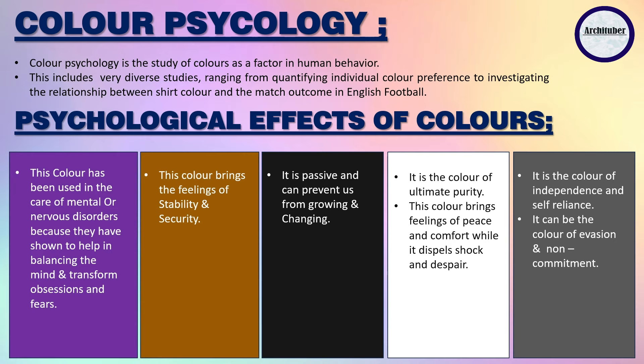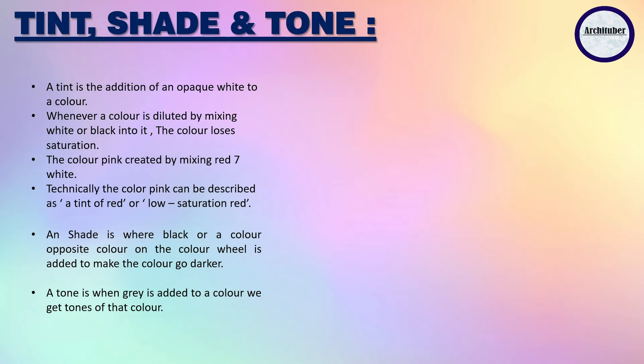Talking about tint, shade and tone: a tint is the addition of opaque white to a color. A shade is created when black or an opposite color on the wheel is added to make a color go darker. A tone is when gray is added to a color. Simply remember: tint equals white, shade equals dark, tone equals gray.